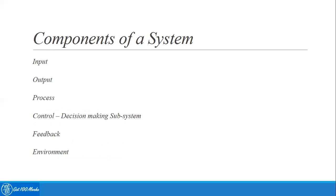Let's move on to the components of a system. The critical components include input, process, output, control mechanisms, feedback, and environment. Starting with input — input involves capturing and assembling elements that enter the system and need to be processed. It could be raw material, text information, numeric information, labor, or any other kind of data that is important and required for further processing.